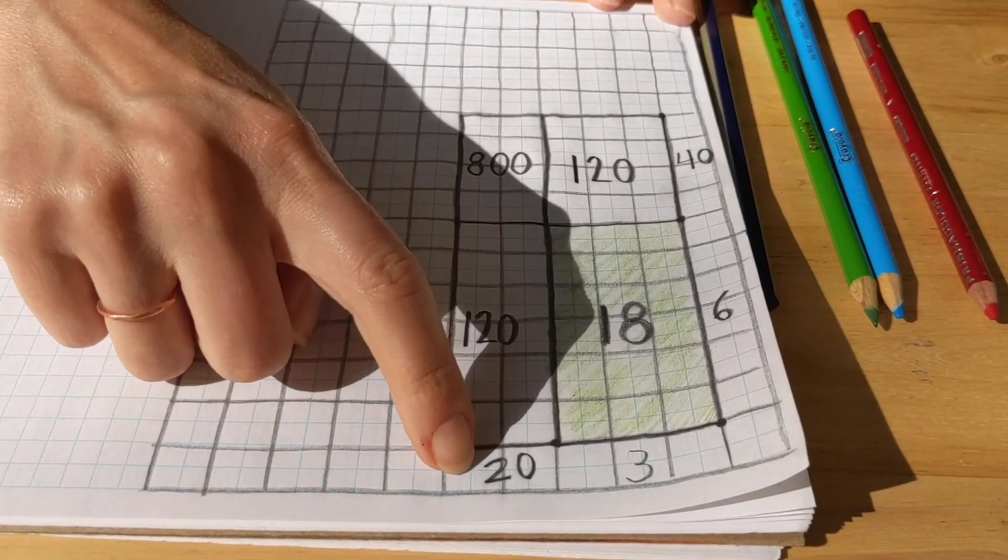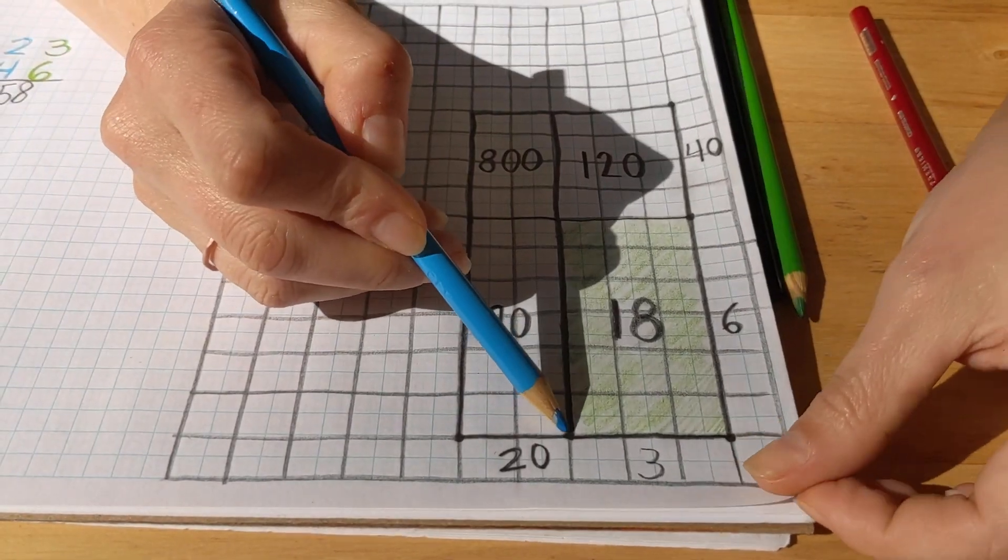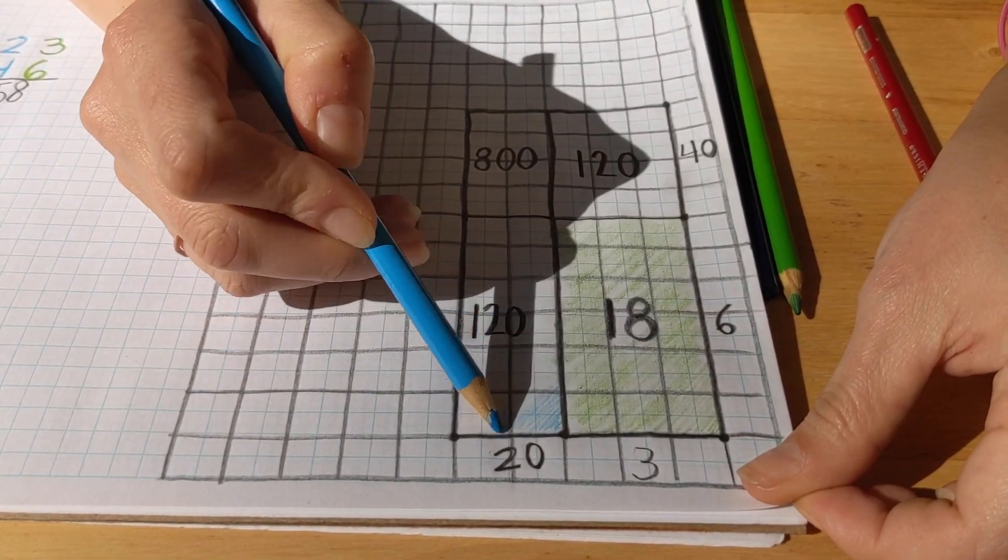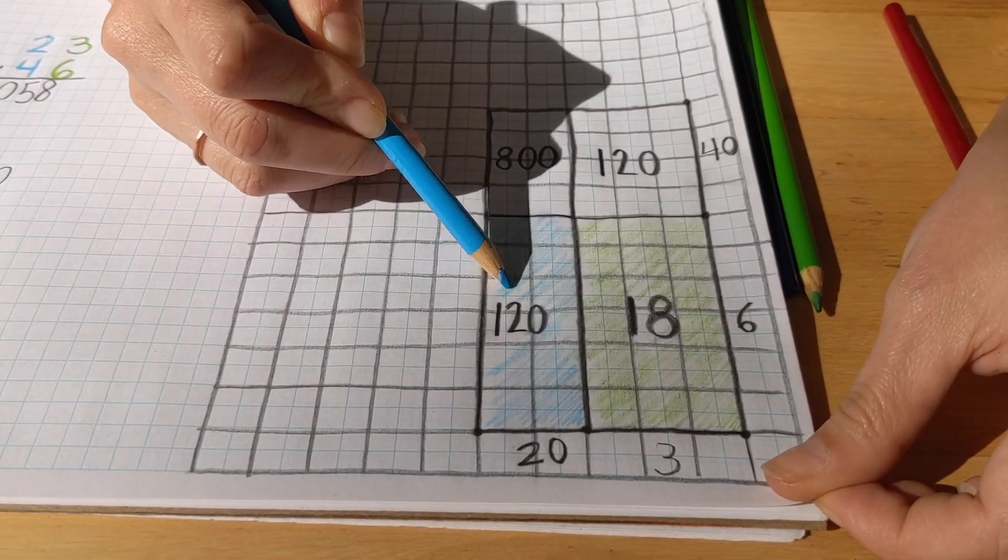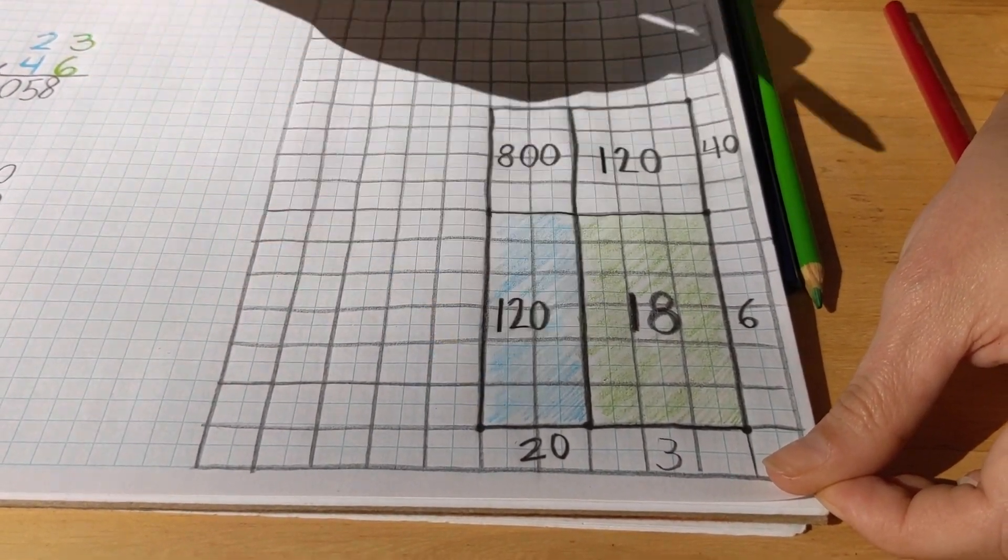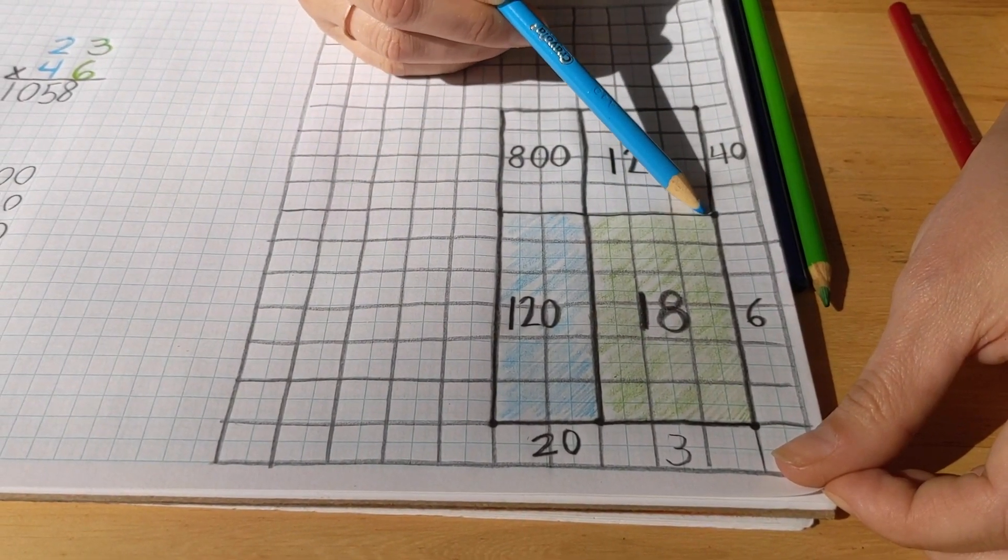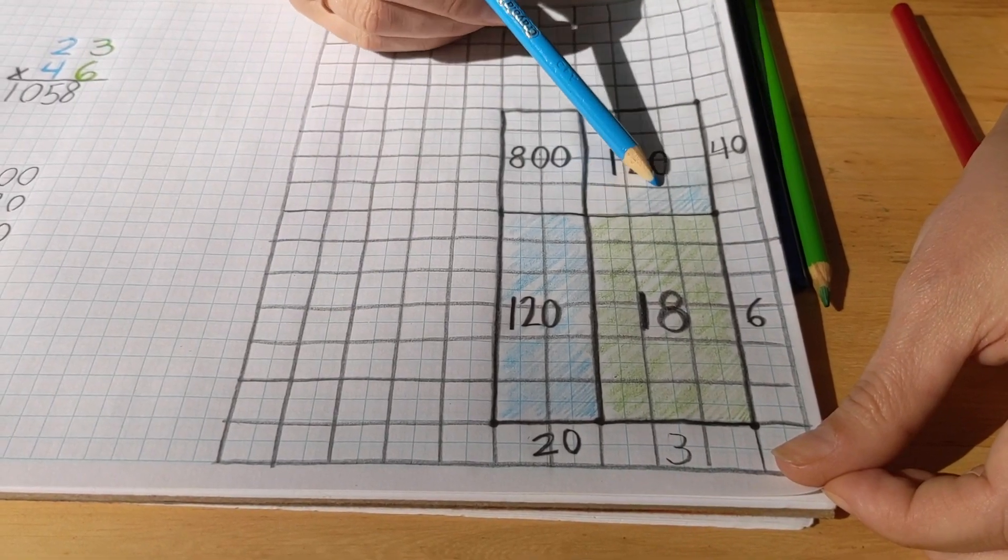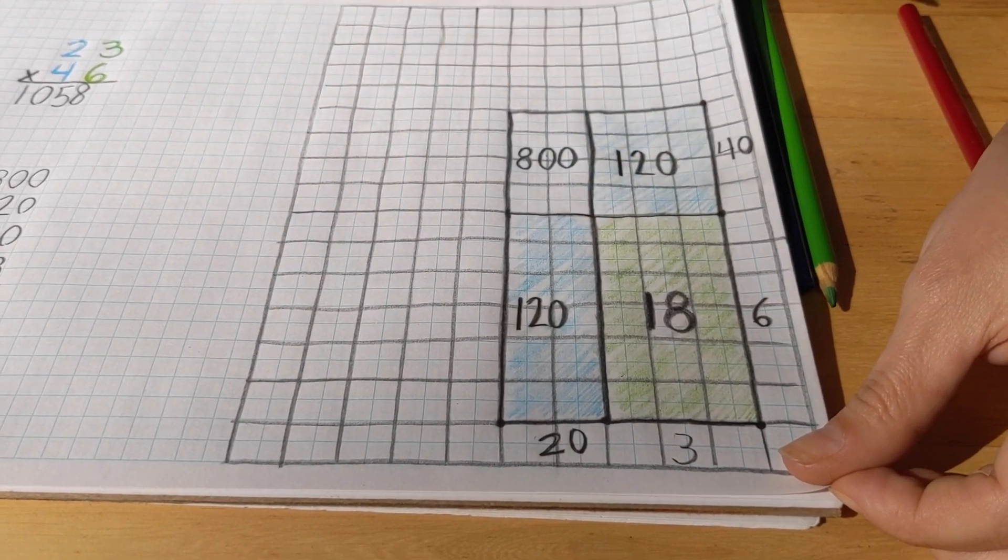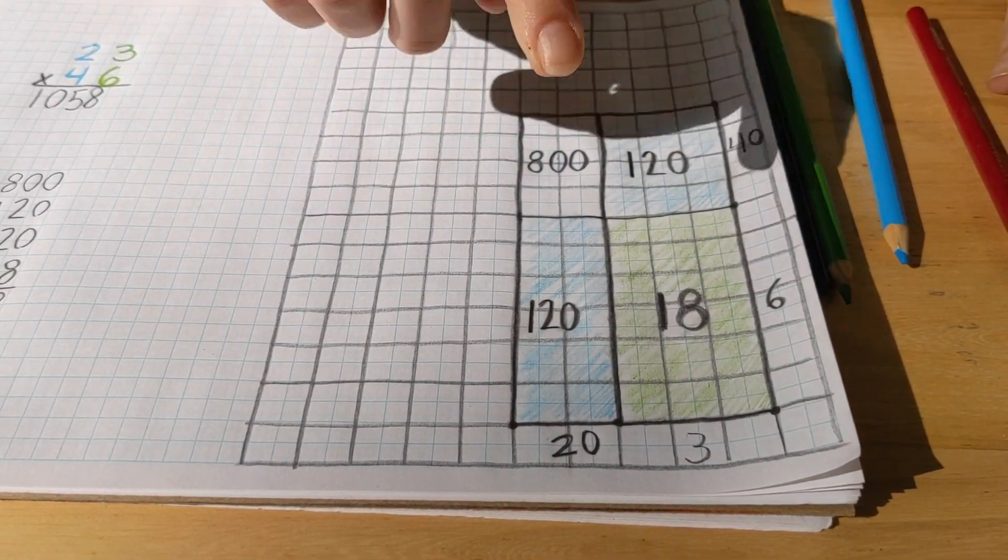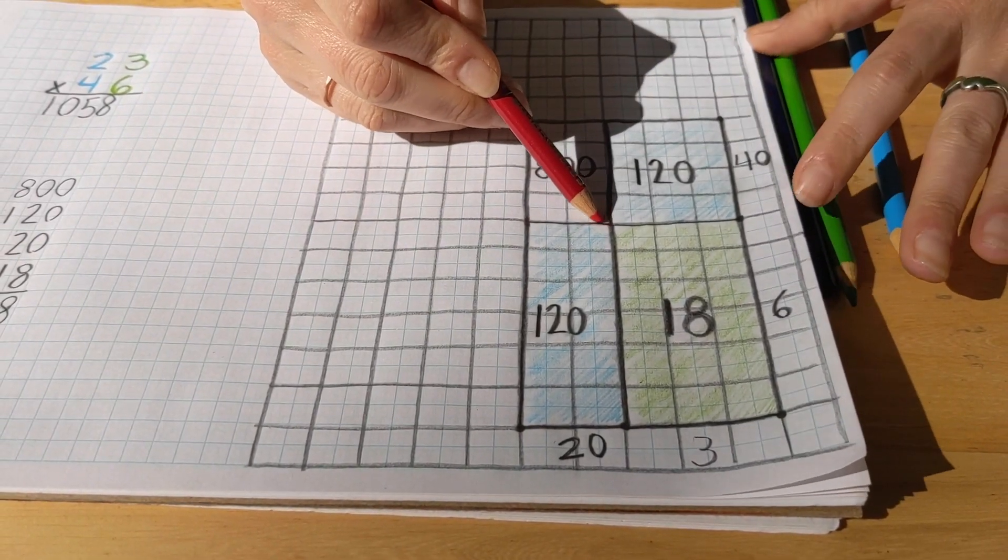When we multiply tens times units, we get tens. So I'm going to color that one in with blue for tens. Again, coloring in lightly so you can still see the number there. And here we again have tens times units, which gives us tens again. And when we multiply tens times tens, we get hundreds. So I'll color that one in red for hundreds.